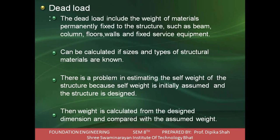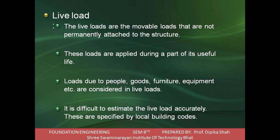Dead load includes weight of materials permanently fixed to a structure such as beams, columns, floors, walls, and fixed service equipment. It can be calculated if size and type of structure material are known. There is a problem in estimating the self-weight of dead load because self-weight is initially assumed and the structure is designed, then weight is calculated from design dimensions and compared with the assumed weight. Live loads are movable loads that are not permanently attached to the structure. These loads are applied during part of its full useful life. Loads due to people, goods, furniture, and equipment are considered in live load.